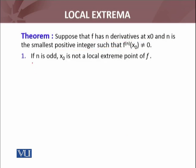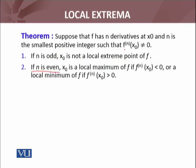The first statement states that if n is odd — यह n जो है odd भी हो सकता है, even भी हो सकता है — अगर n odd है, तो x naught is not a local extreme value point of f. f(x naught) ना local maximum होगा ना local minimum होगा. Second statement is: if n is even, तो x naught is a local maximum of f if fⁿ(x naught) < 0, and if fⁿ(x naught) > 0 तो यह local minimum होगा.